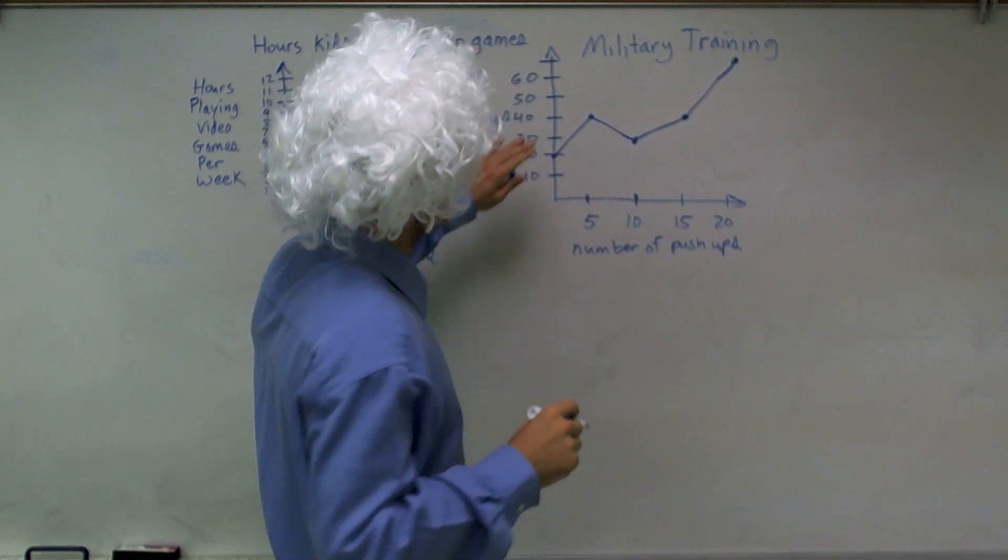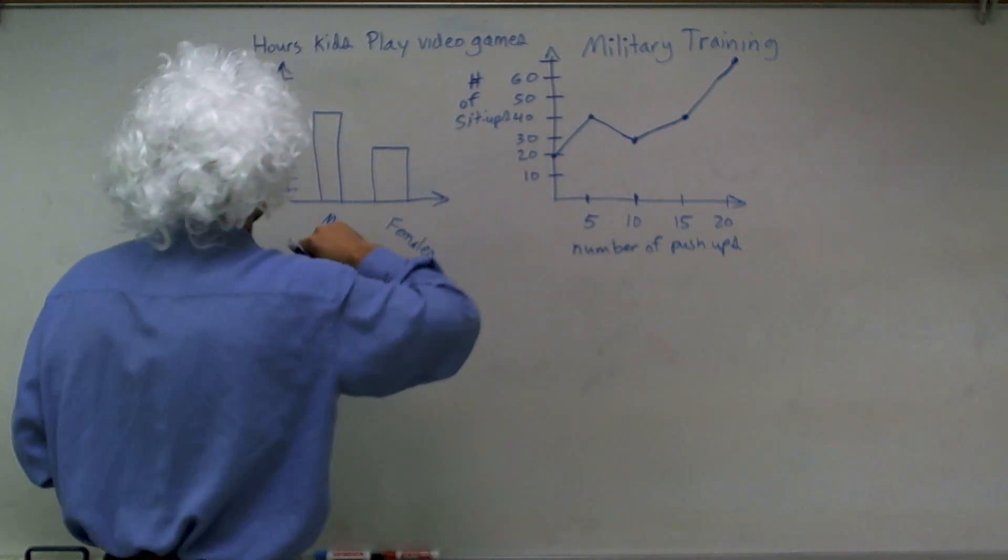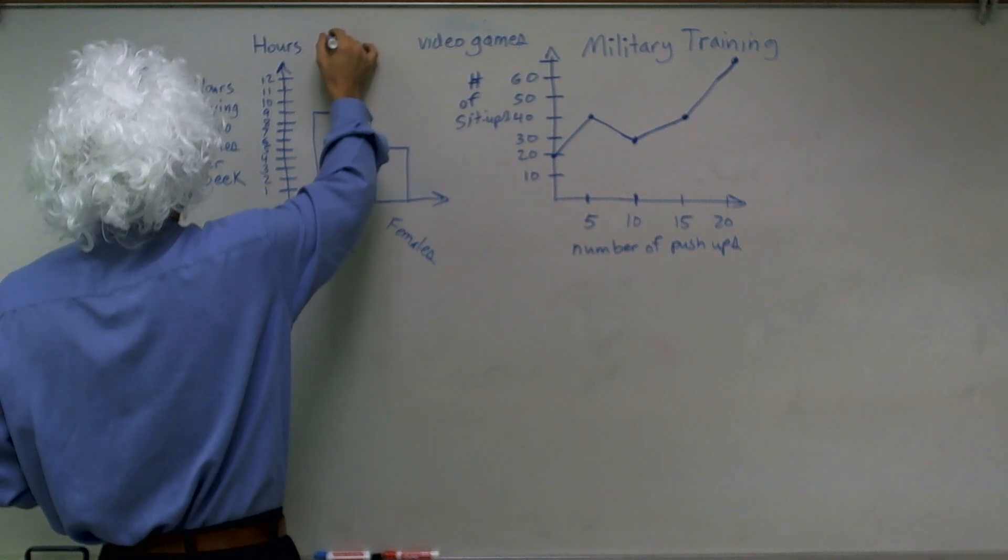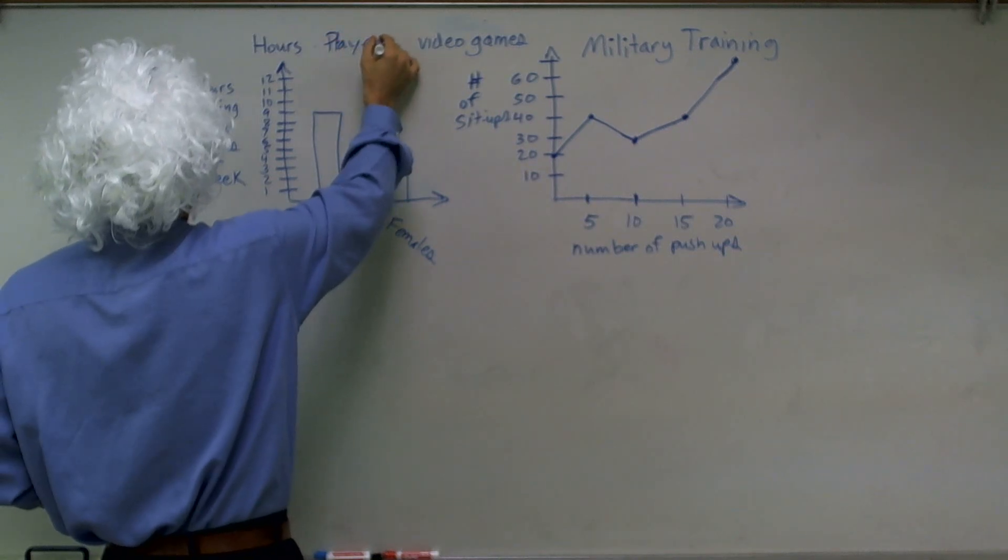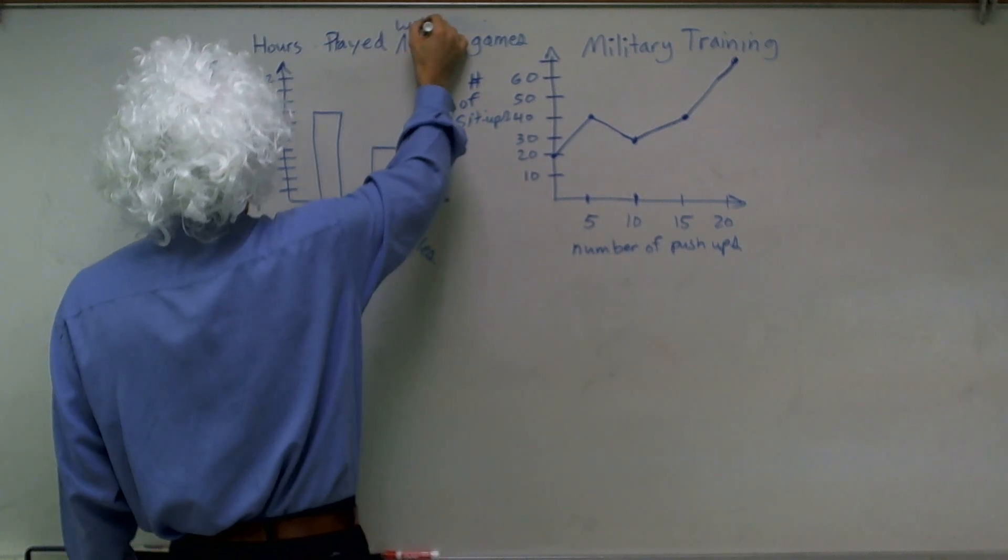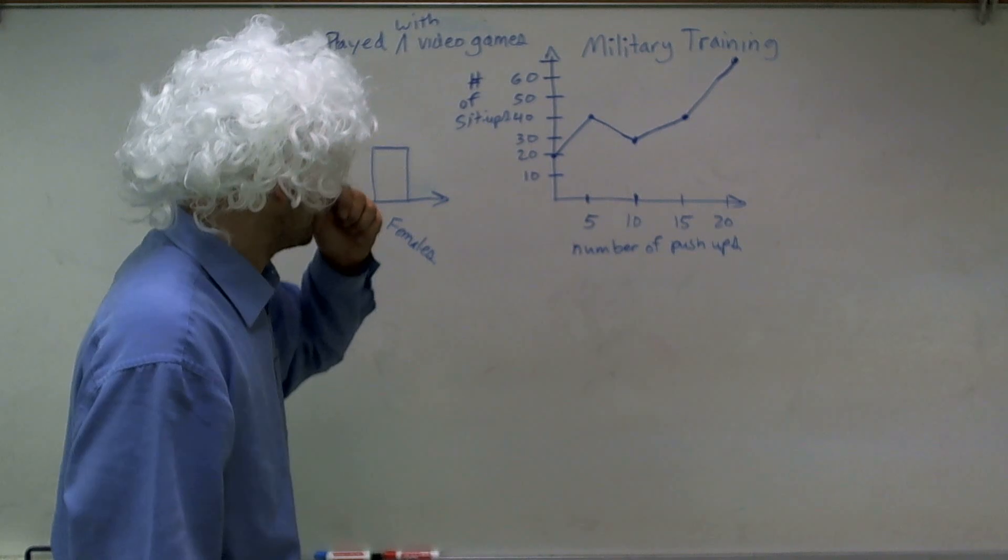So the first one is the hours that kids play video games. And this one is military training. I think this actually was wrong. Hours. Hours played. Hours played with video games. And this one was military training.